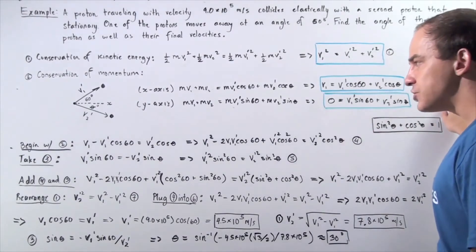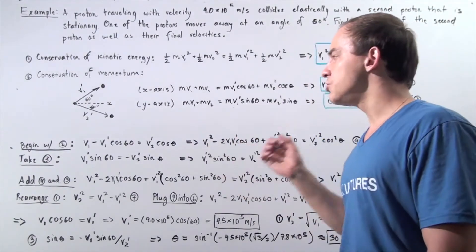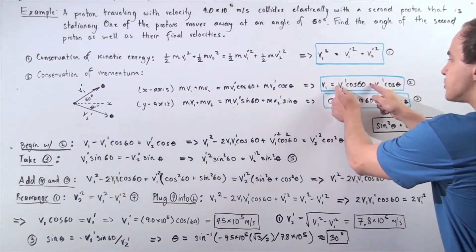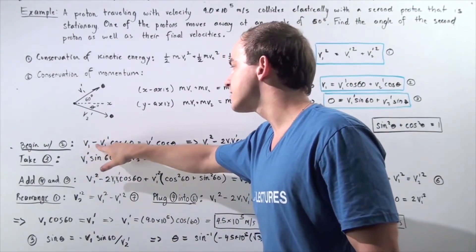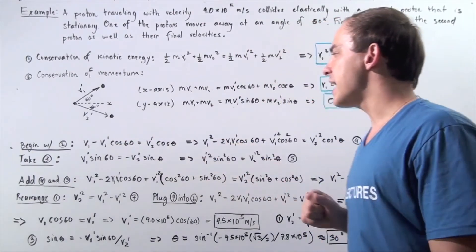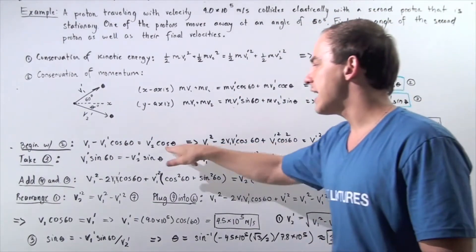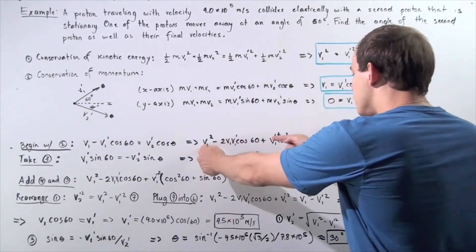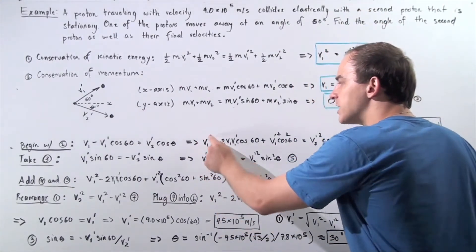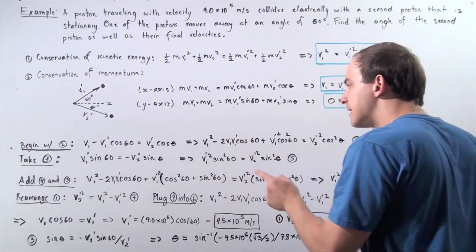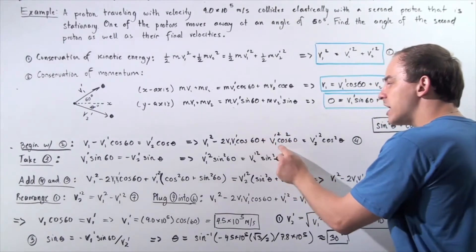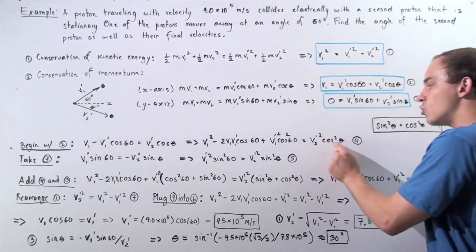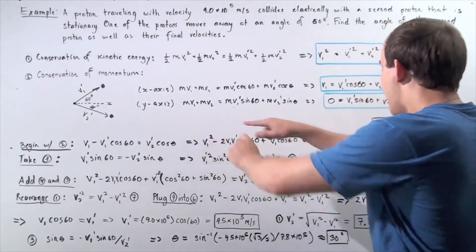We have three unknowns and three equations, so we can solve. Starting with equation 2, we bring the V1 prime cosine 60 term to the left side: V1 minus V1 prime cosine 60 equals V2 prime cosine theta. Squaring both sides and expanding, we get: V1 squared minus 2·V1·V1 prime·cosine 60 plus V1 prime squared·cosine squared 60 equals V2 prime squared·cosine squared theta. Let's label this equation 4.